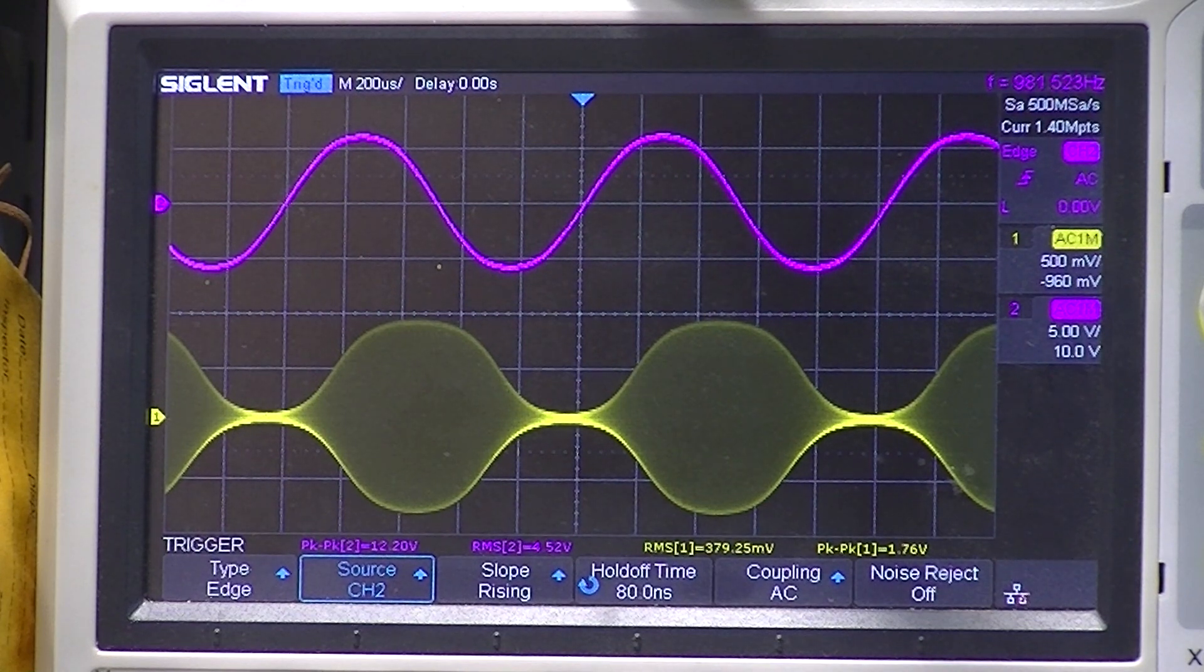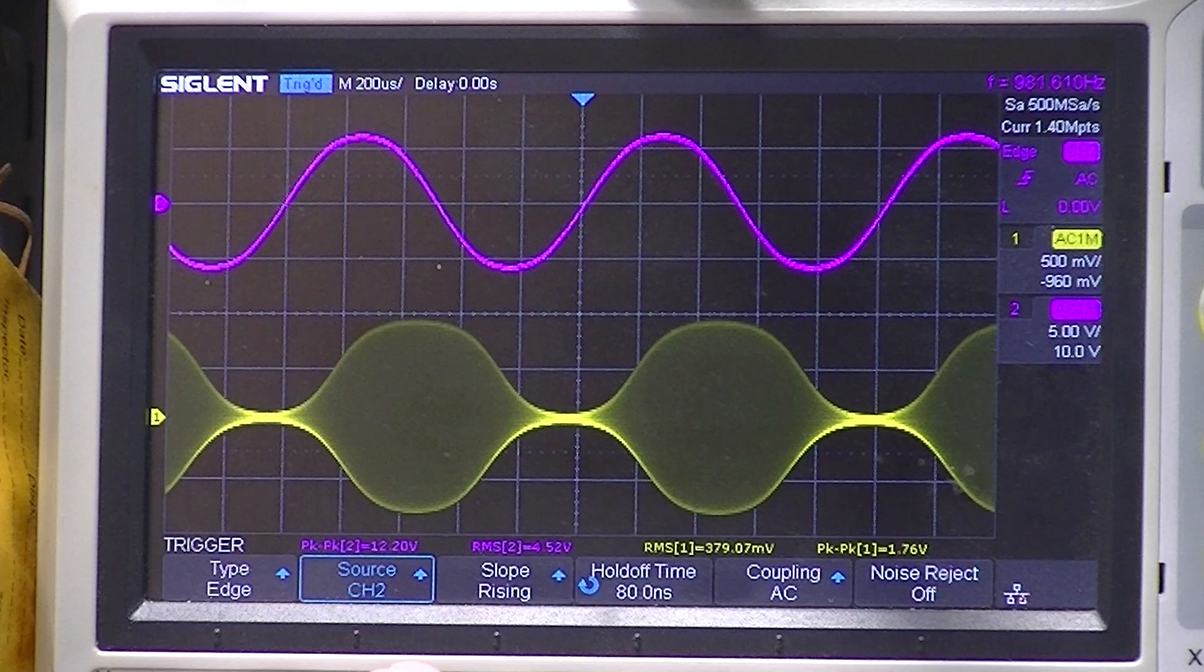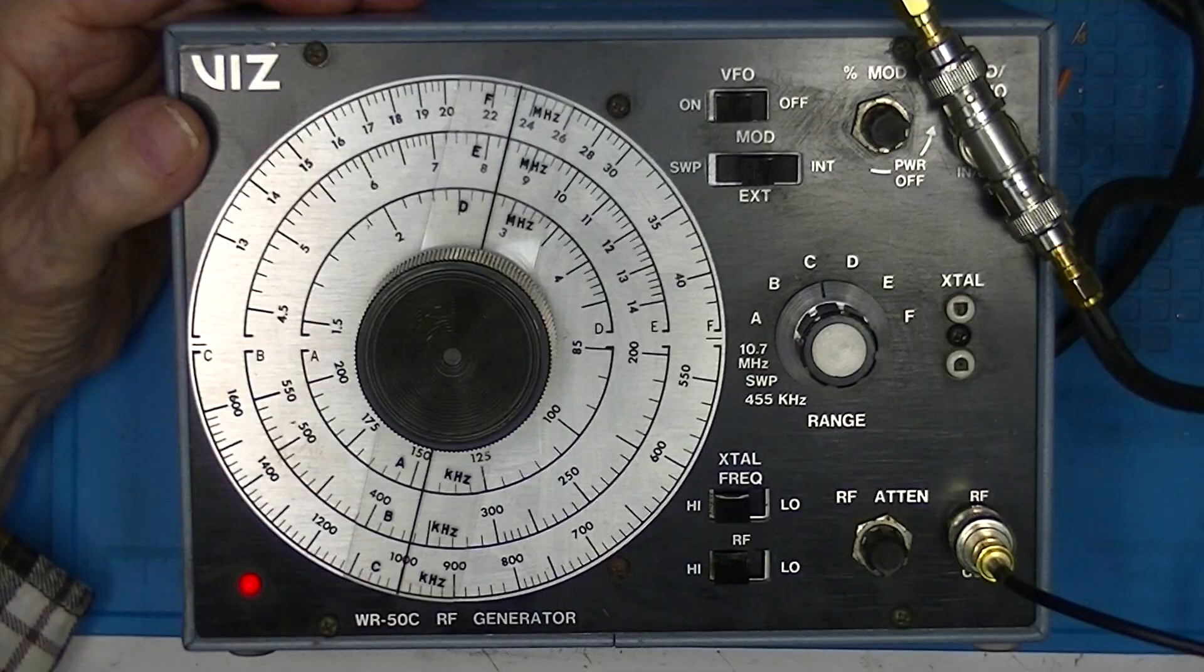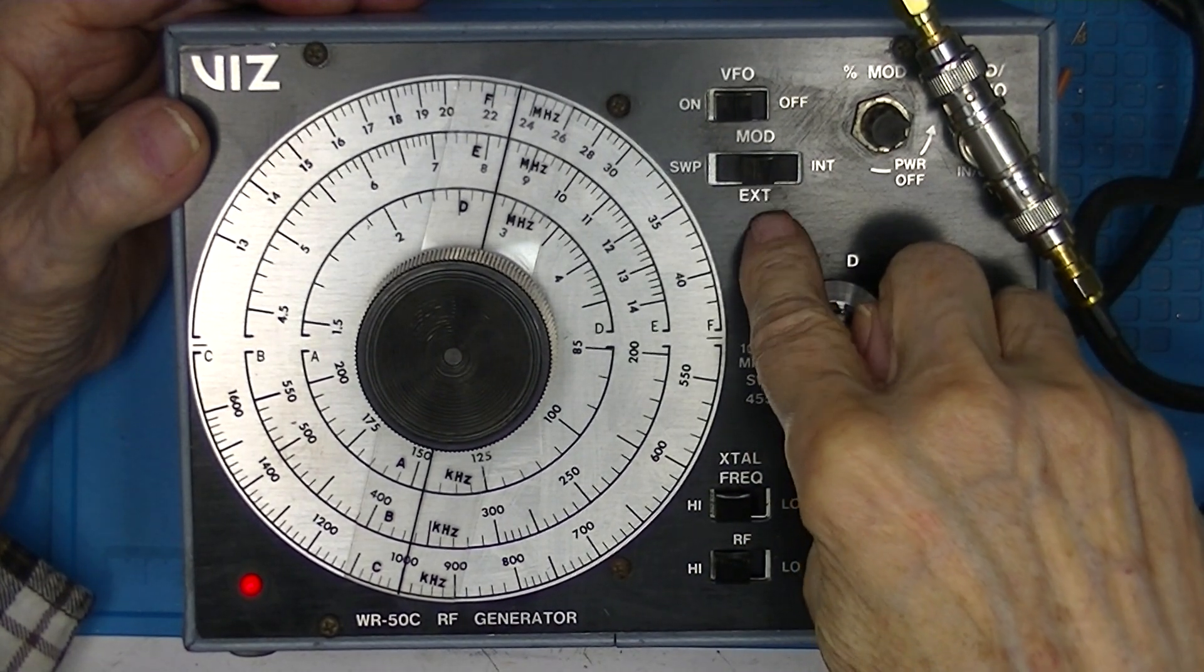And the RF and the function generator is outputting 12 volts peak to peak. That's with the modulation switch set in external.